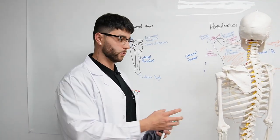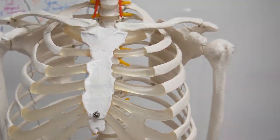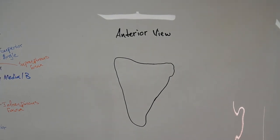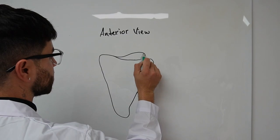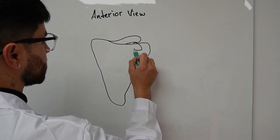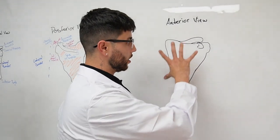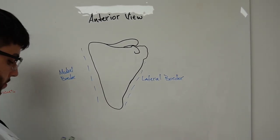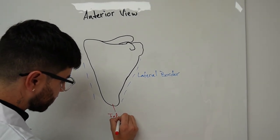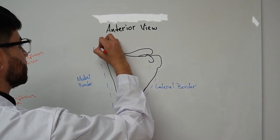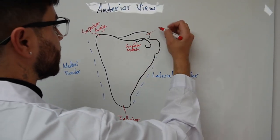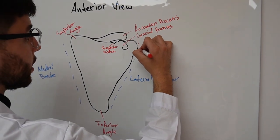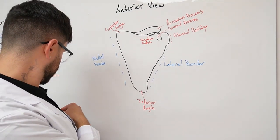Let's get into the anterior view, which is the inner portion of the scapula. You've got the acromion process and the coracoid process — pretty much refreshing our minds on everything here. You've got the lateral border, the medial border, the inferior angle, the superior angle, the scapular notch, and the glenoid cavity.